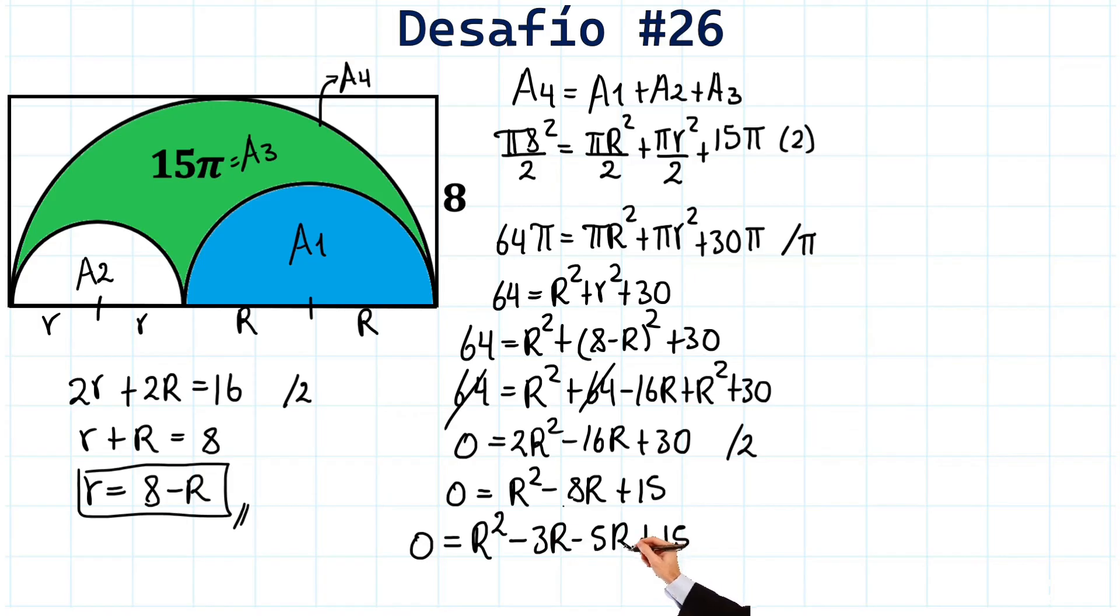Very well. We did this on purpose to have here a factorization by grouping terms. We are going to do that with a blue pen here. Notice we have 0 on the left side. And on the right side, we have R squared minus 3R.